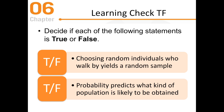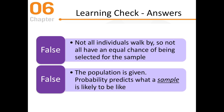True or false: Choosing random individuals who walk by yields a random sample. Second question: Probability predicts what kind of population is likely to be obtained. Both answers are false.